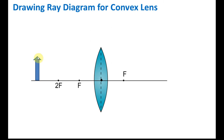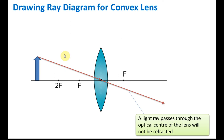Rule number one: any light ray from the object that passes through the optical center will not be refracted — it will just move forward in a straight line. So a light ray that passes through the optical center of the lens will not be refracted.